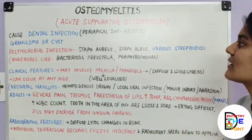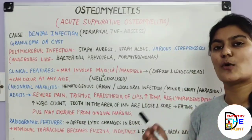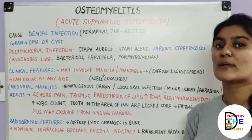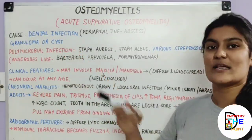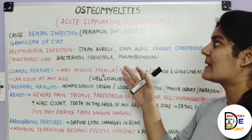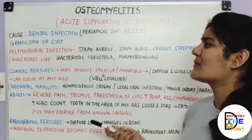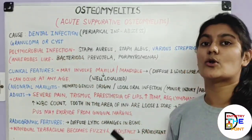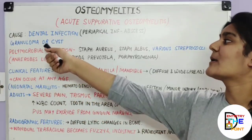Starting with acute suppurative osteomyelitis: this is a sequel or continuation of periapical infections that results in inflammation spreading through the medullary spaces, involving the bone. The most common cause is dental infection — specifically periapical infections such as abscesses. Less common causes include granuloma or cyst formation if they are not walled off or treated.